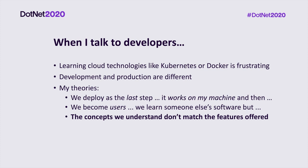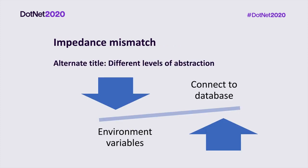When I talk to developers about these topics, they find deployment most frustrating — because it's where you go from 'it works on my machine' to not working on someone else's machine. We habitually get something working as quickly as possible and then think about deployment as the last step. We're let down when the concepts we use don't match what's offered by the runtime. It's a classic impedance mismatch problem — we think about what we want to do in one way, but the system requires a different kind of thinking.